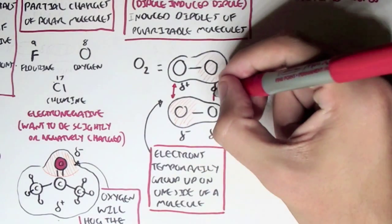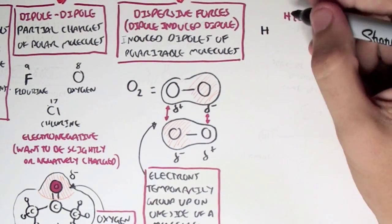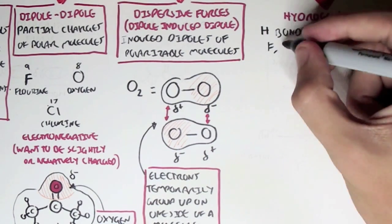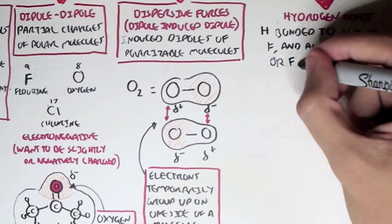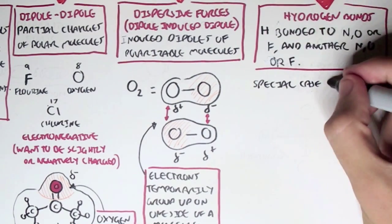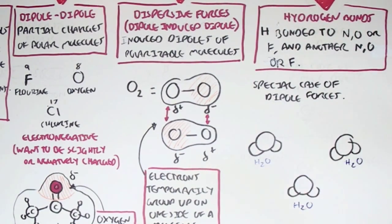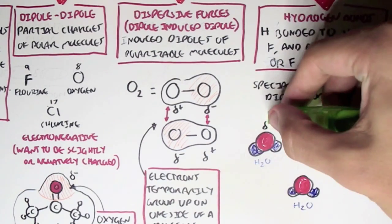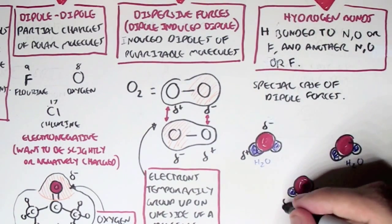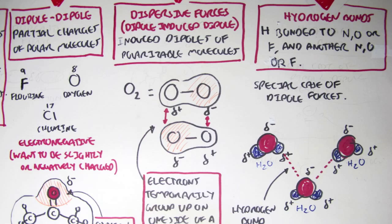The last type of intermolecular force is hydrogen bonds, which are very similar to dipole-to-dipole bonds. Hydrogen bonded to nitrogen, oxygen, or fluorine is attracted to another nitrogen, oxygen, or fluorine on a different molecule — making hydrogen bonding a special case of dipole forces. A good example is water: oxygen is electronegative and has a partial negative charge, while hydrogen has a partial positive charge. The attraction between these partial charges forms hydrogen bonds.